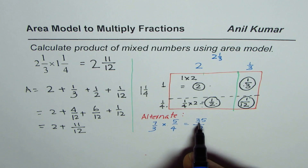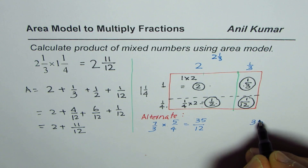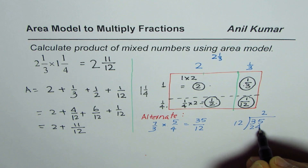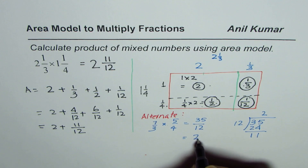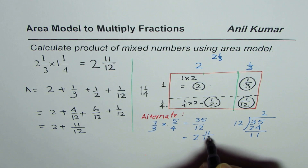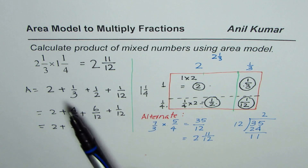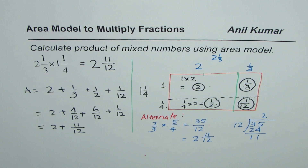To convert 35/12 back to a mixed number, we do long division: 12 times 2 is 24, with a remainder of 11, giving us 2 and 11/12. This confirms our area model answer. The area model is a visual representation of multiplication of fractions. I hope this concept is clear to you — thank you and all the best.